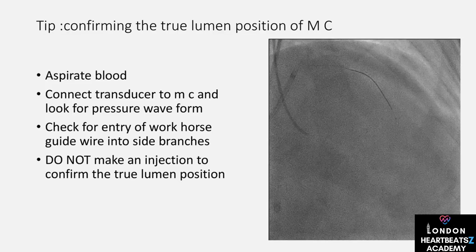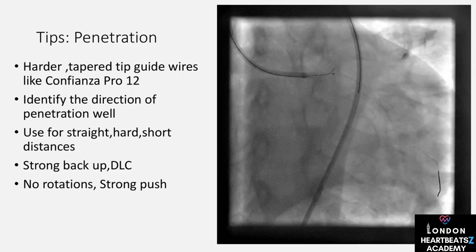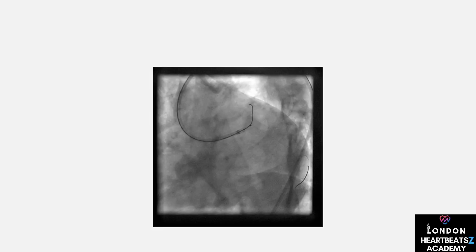In our quest to conquer CTOs, we have several strategies at our disposal — think of them as different paths up a mountain. We can use antegrade wire escalation, gradually increasing the stiffness of our guide wire to cross the occlusion. Alternatively, we might opt for retrograde wire escalation, approaching the occlusion from the opposite direction. Antegrade dissection re-entry and retrograde dissection re-entry are other options, where we create a dissection plane and re-enter the true lumen. Often, we combine these techniques. Remember, there's no one-size-fits-all guide wire for CTOs — each case requires a tailored approach.